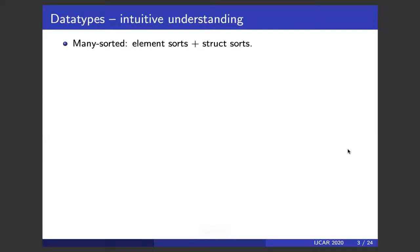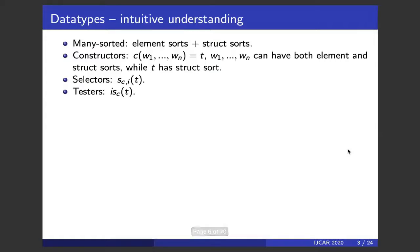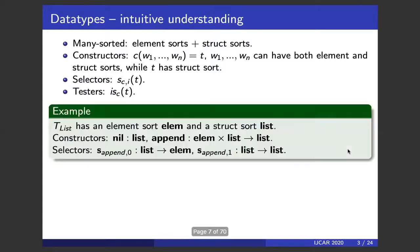Let's start with the concept of data types. Data types are many-sorted: they have element sorts and structure sorts. They have constructors of the form c: w1 × ... × wn → t, where w1 to wn can be element or structure sorts, while t must be a structure sort. Correspondingly, there are selectors sc_i: t → wi to select the i-th argument if t is constructed by c, and testors is-c(t) to test if t is constructed by c.